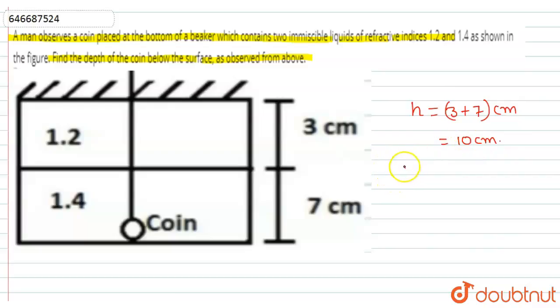We have h1 equal to 3 cm with refractive index n1 equal to 1.2, and h2 equal to 7 cm with n2 equal to 1.4.